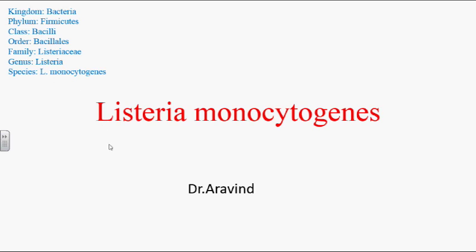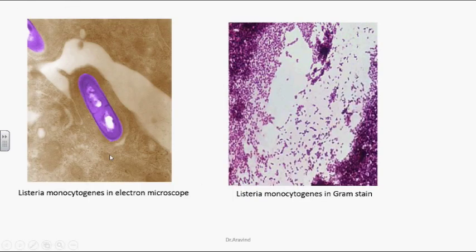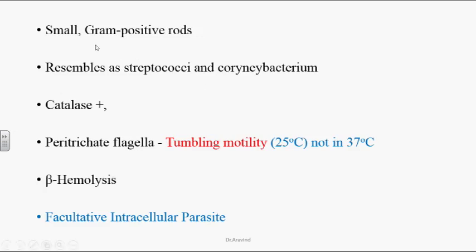Species Listeria monocytogenes. In electron microscopic pictures, the Listeria organism looks very tiny. In gram stain smears, the Listeria organisms are very tiny and they resemble streptococci or Corynebacterium diphtheriae. They are very small gram-positive rods.